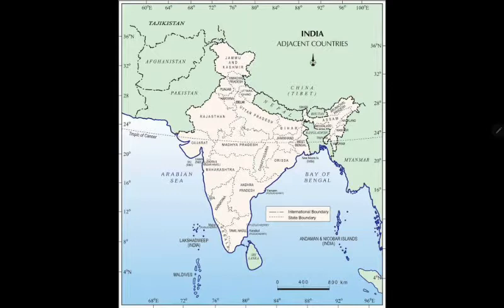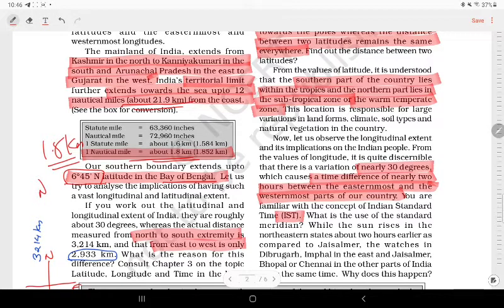This is the latitude of the Tropic of Cancer. The Tropic of Cancer divides India here — the area above is the Tropic Zone, and the southern part is the Tropical Zone. The northern part is the subtropical zone.